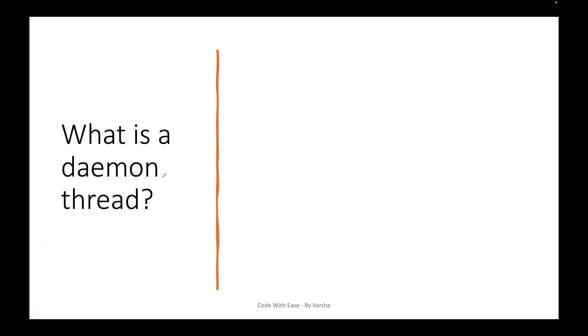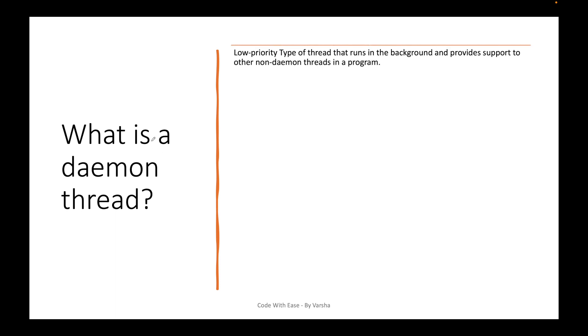Rude's question is: what is a daemon thread? This may not be a direct interview question, but there can be different forms of interview questions asked around daemon thread. A daemon thread is a low priority type of thread — try to remember this 'low priority' keyword, as we will see in the code demo why this matters. It runs in the background to provide support to non-daemon threads, which are nothing but user threads. Any thread running in the background at low priority is called a daemon thread.